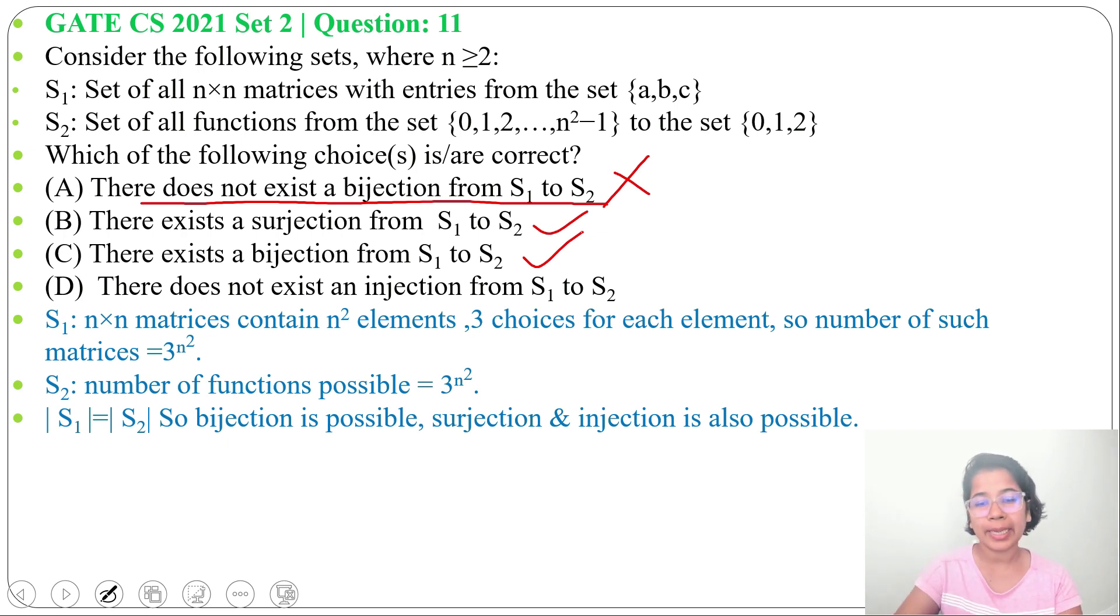Then option D: there does not exist an injection from S₁ to S₂. This is false. As it is a bijection, so it is both surjection and injection. Hence the answer will be option B and option C.